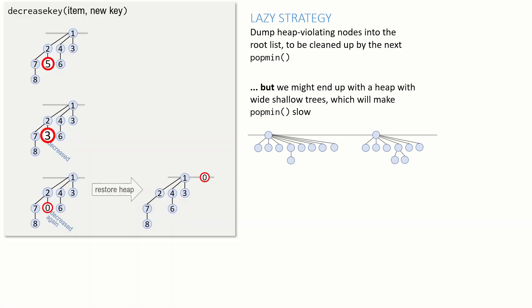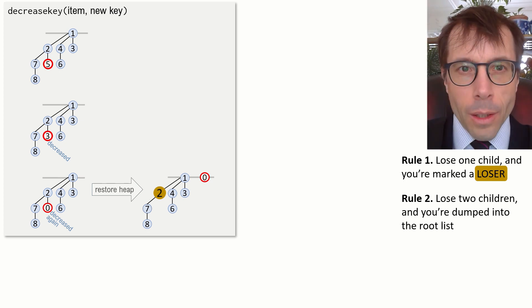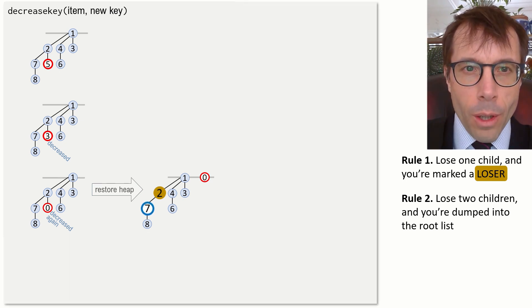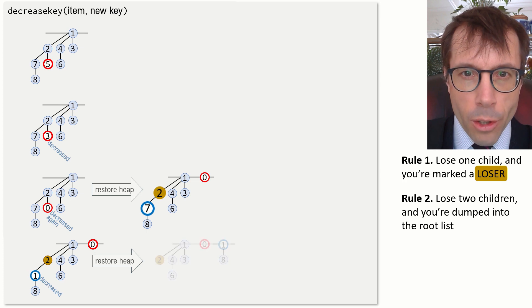Every time a node loses a child, we will mark that node as a loser. And if you lose two children, you get kicked out of the tree yourself. Let's walk through an example. Let's suppose we take this node, the seven, and we decrease its key down to one. Then it's now a heap violator. And so to restore the heap, we'll cook it out of the tree and dump it into the root list.